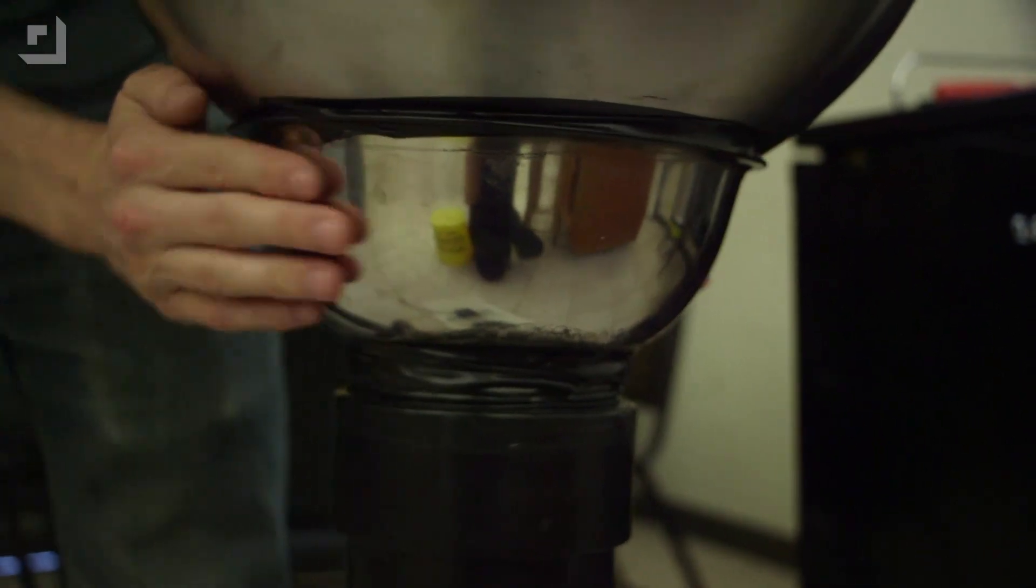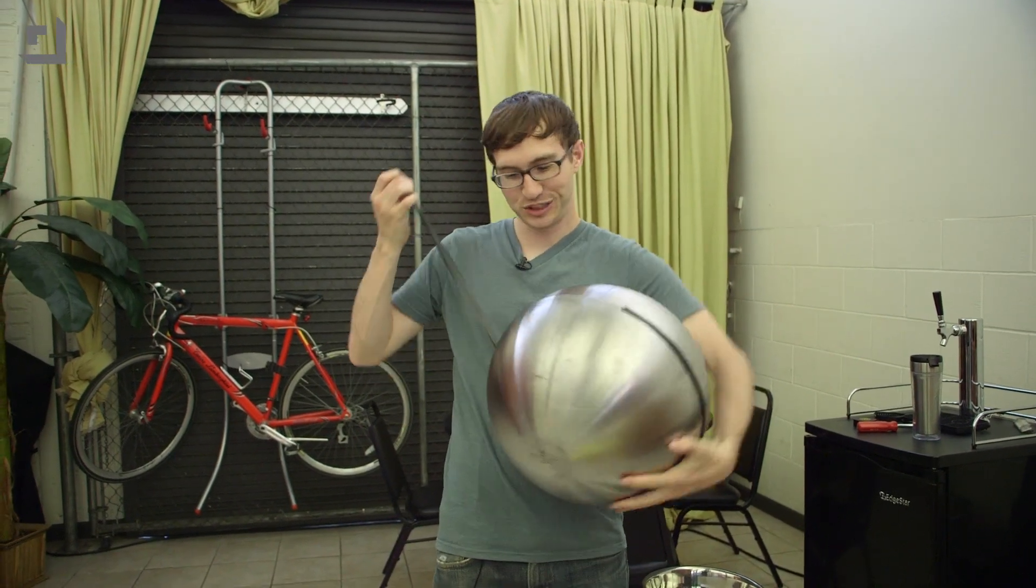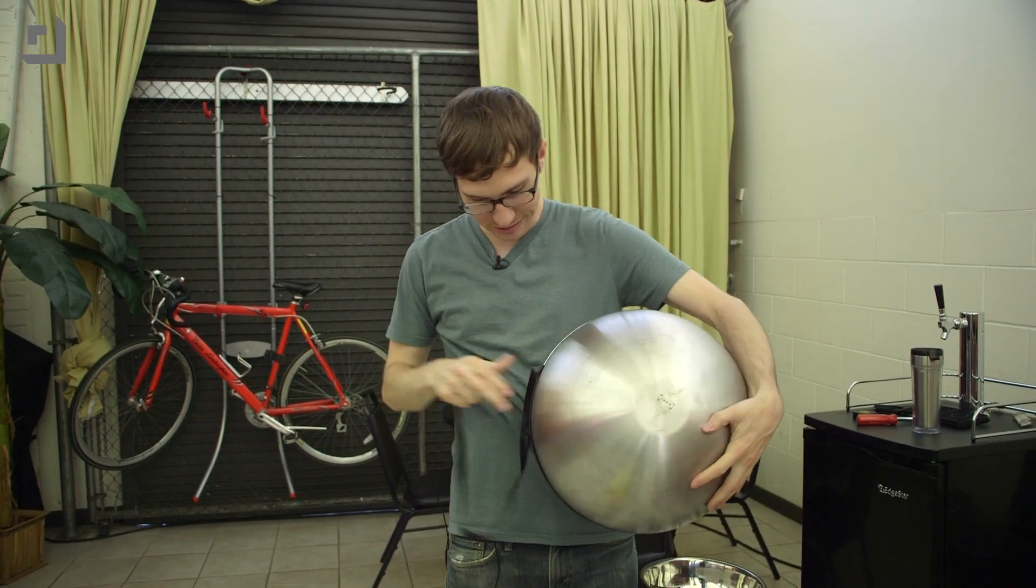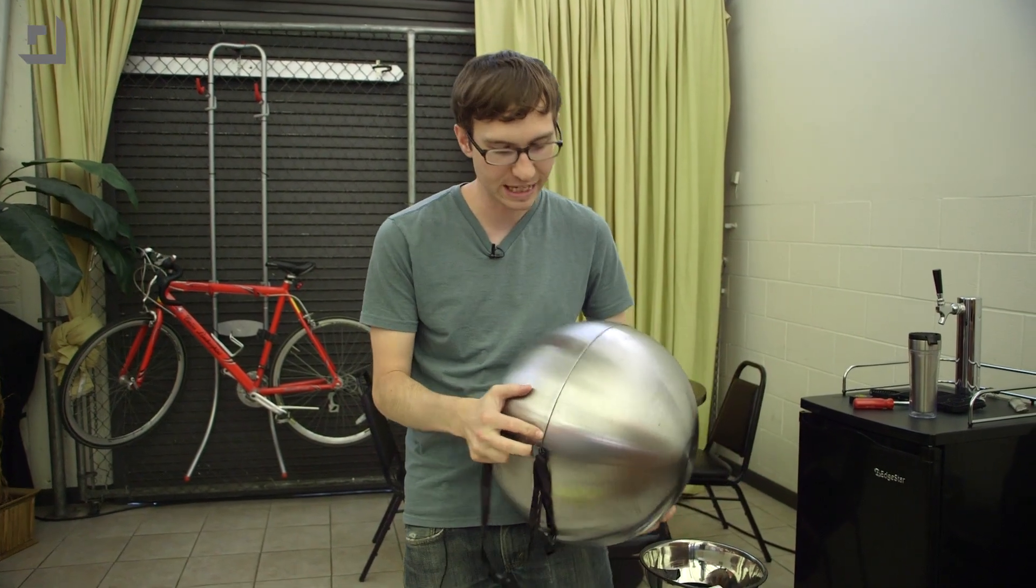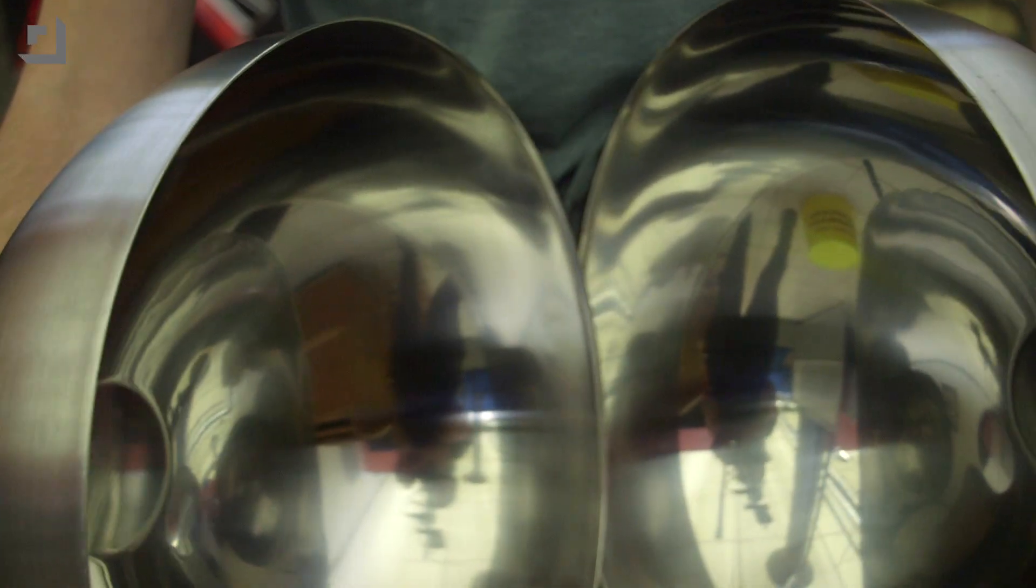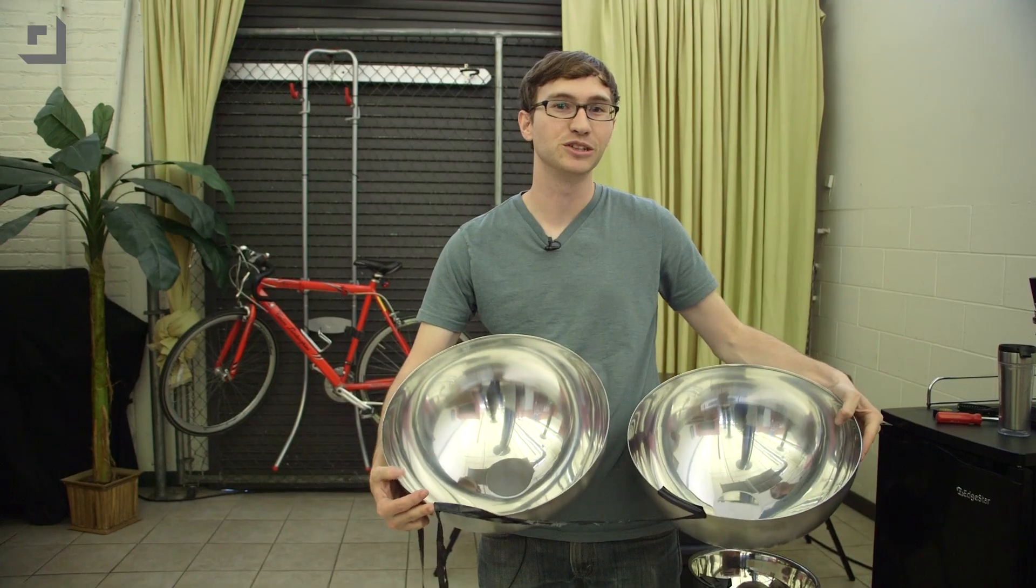On to the sphere. These are actually two IKEA bowls just taped together with some electrical tape. These are really awesome because they have basically no lip whatsoever. One thing that you want to make sure of is that you don't have sharp edges on your sphere, otherwise you'll lose your charge to coronal discharge.